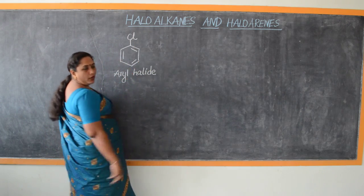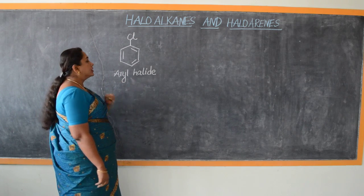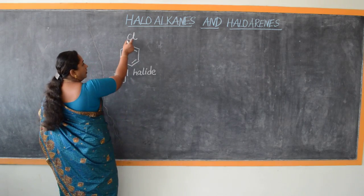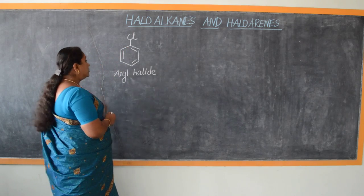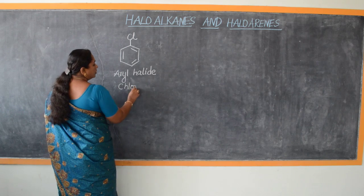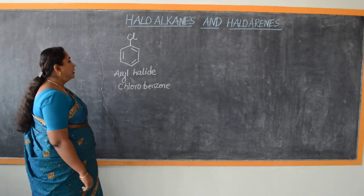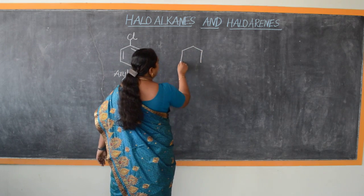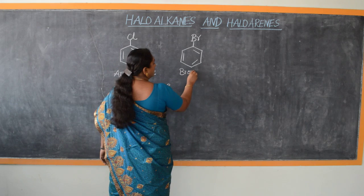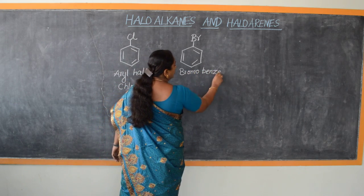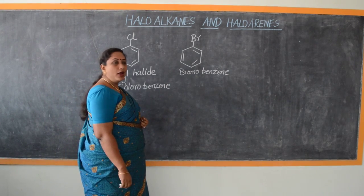Just as we have alkyl halides for haloalkanes, in a similar way we have the general name aryl halides for haloarenes, where one halogen atom replaces a hydrogen atom by the process of substitution. For example, this compound is chlorobenzene — its IUPAC name. Another example is bromobenzene. So haloarenes, or aryl halides, are monohalogen derivatives of aromatic hydrocarbons.